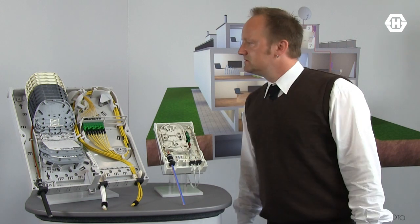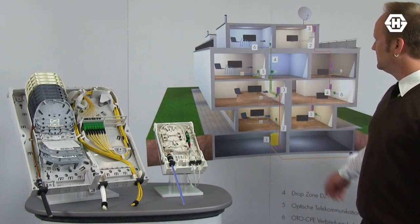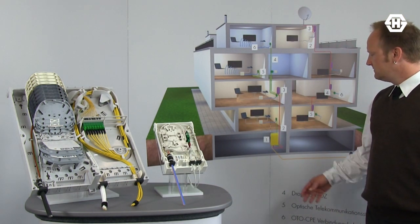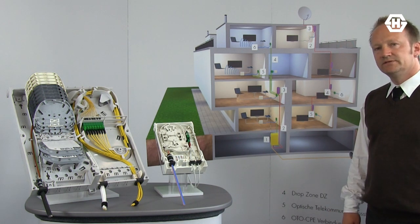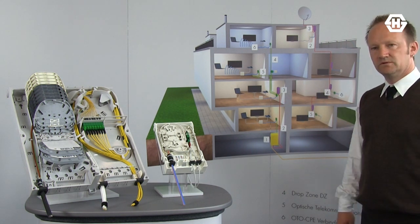OptiBoxes are developed specially for fiber to the home applications, for example, as a building entry point or as a floor distributor.